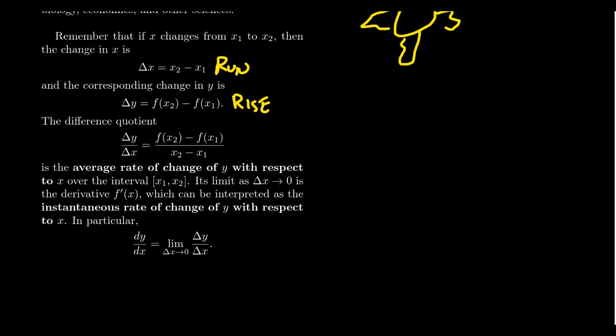So when you look at the quotient delta Y over delta X, this has the formula F of X2 minus F of X1, that's the delta Y, over X2 minus X1, that's the delta X. And so you put that together, this looks like your rise over run, which is the typical mnemonic device for remembering the slope.